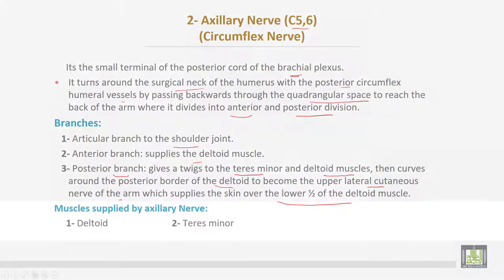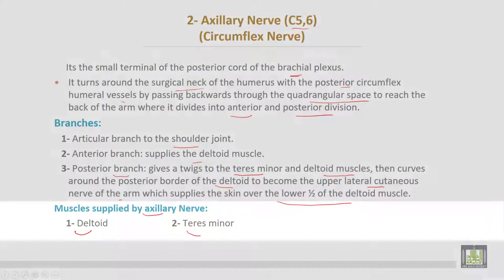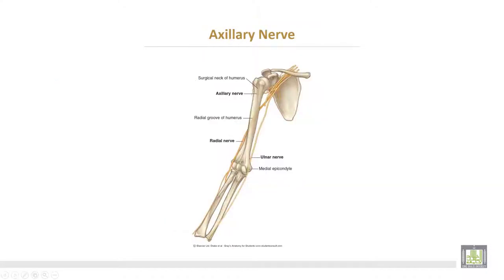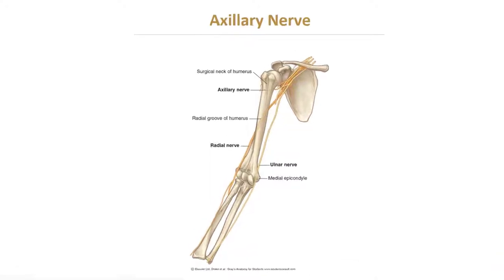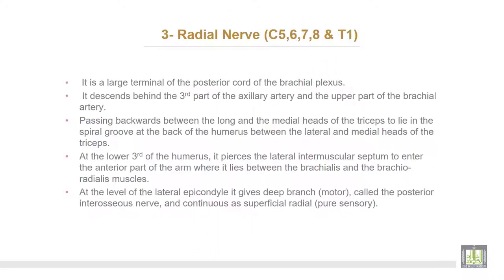The muscles supplied by the circumflex or axillary nerve are: number one, deltoid; number two, teres minor. This nerve arises from the posterior cord of the brachial plexus.